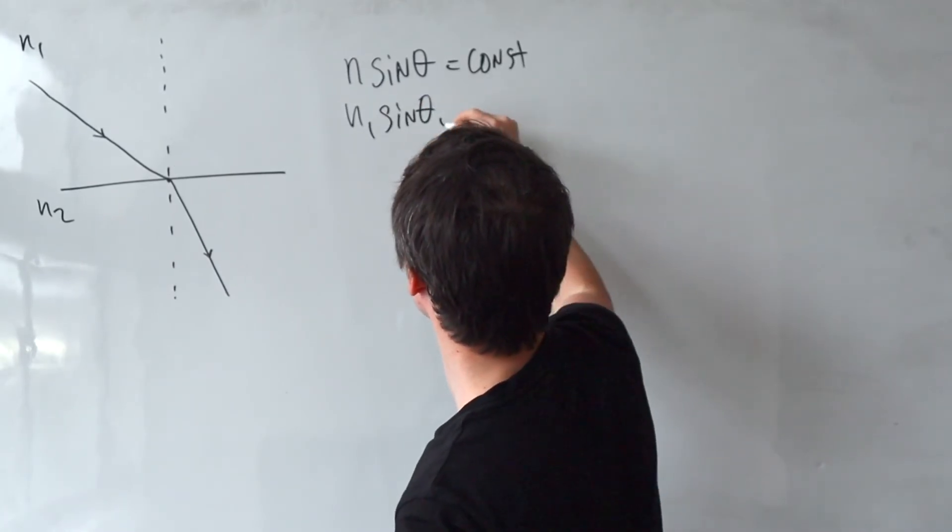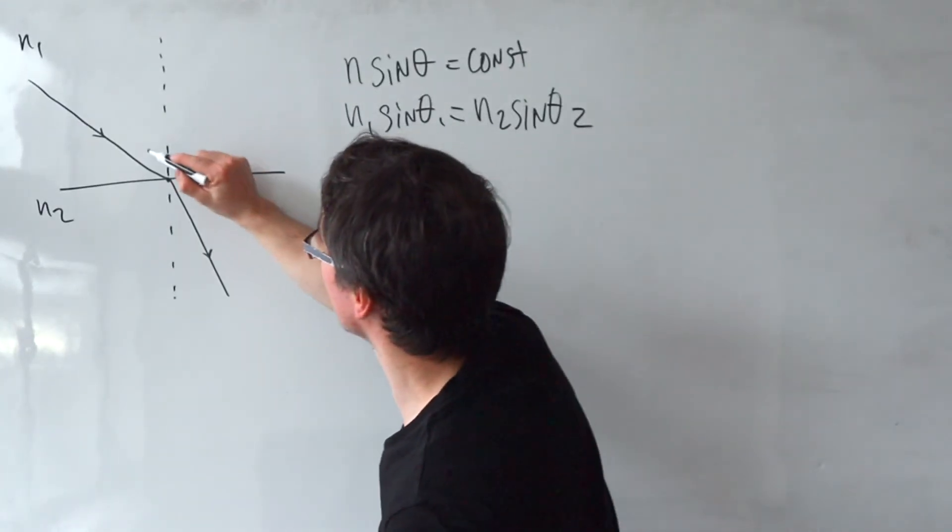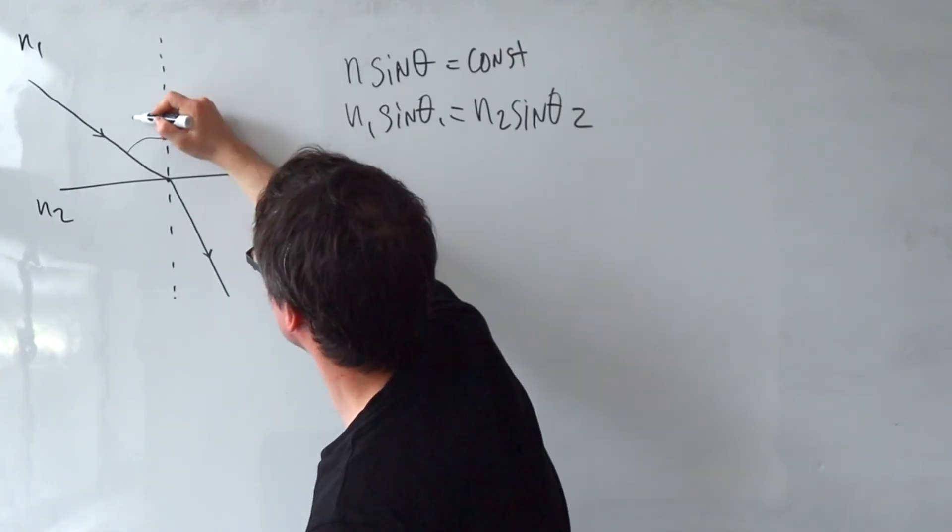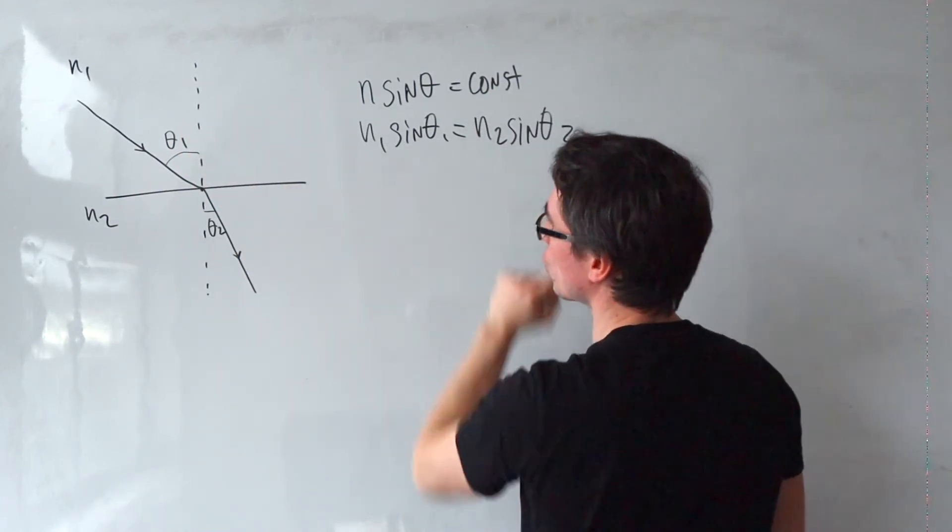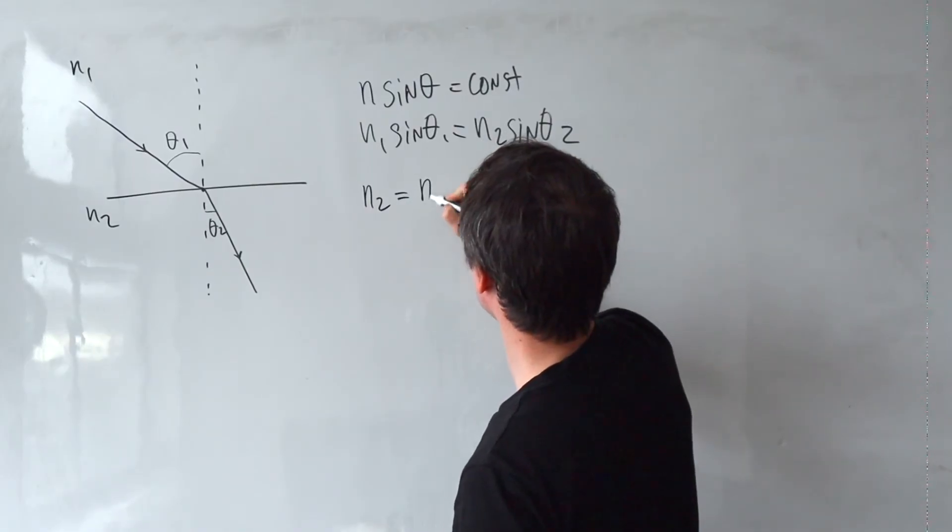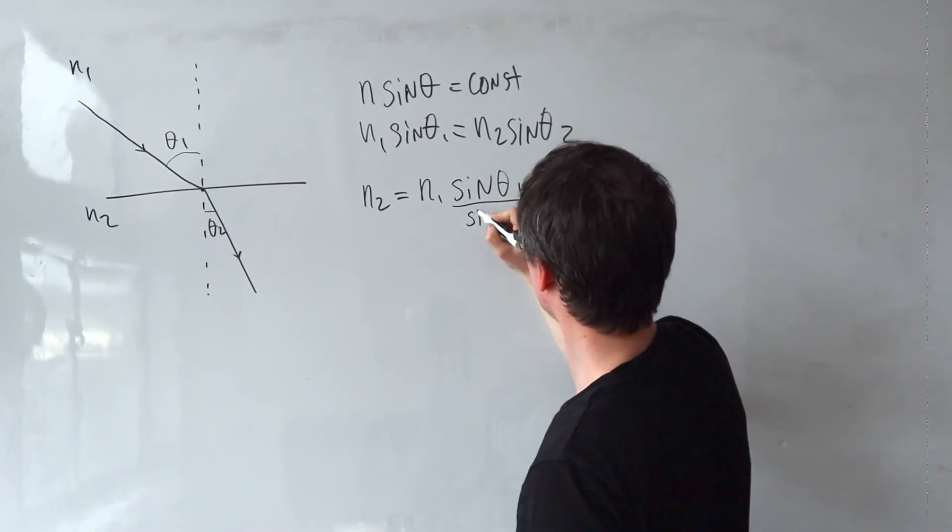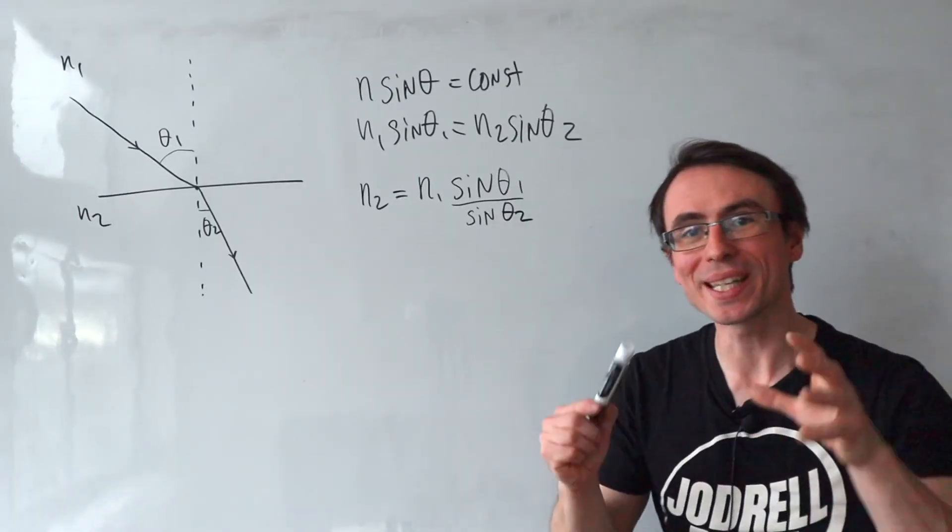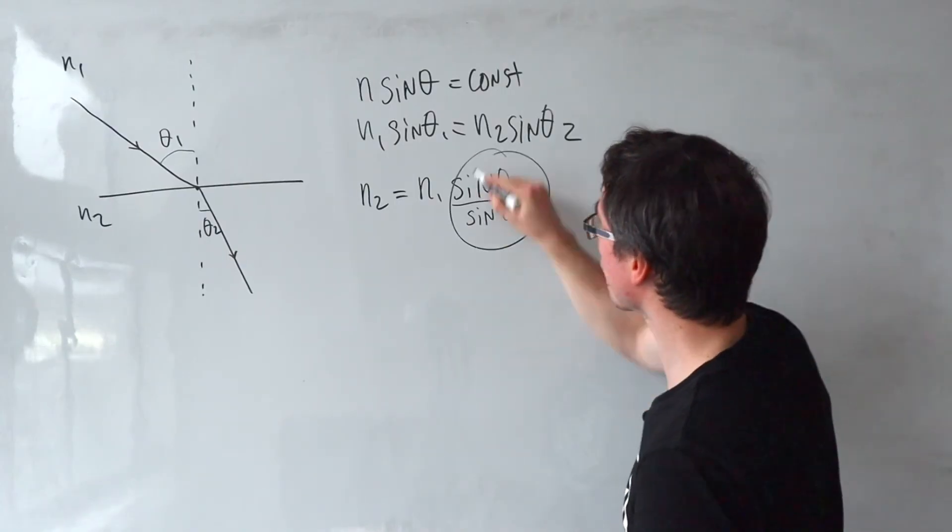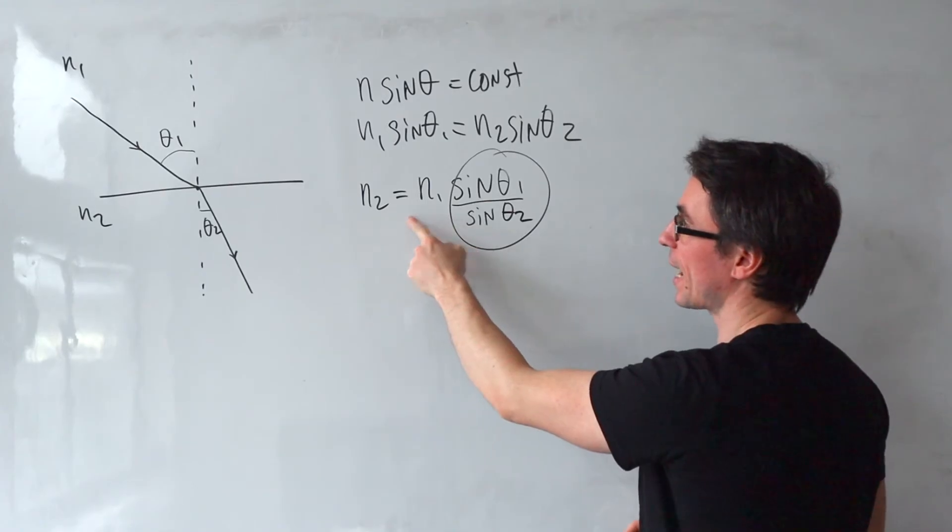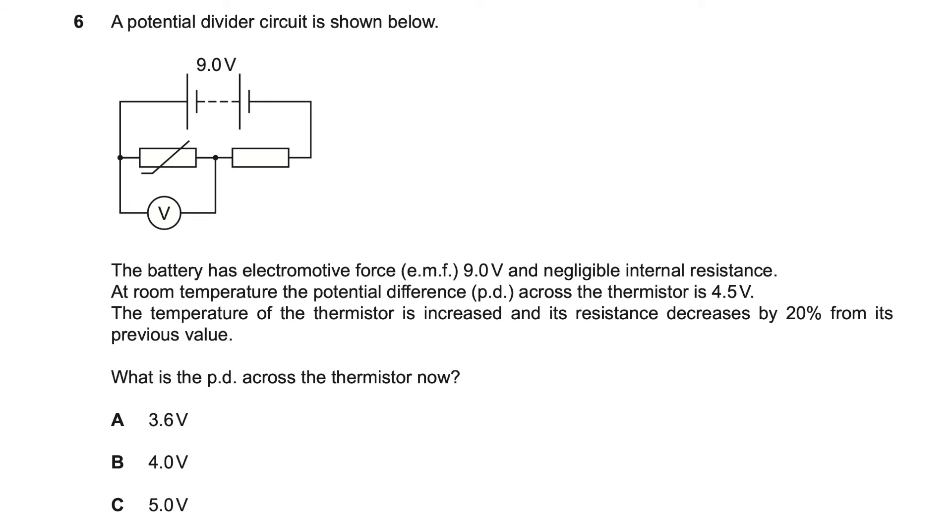In A-level, we have to explain things using physical laws, and the law which governs this is Snell's law, which says that N sine theta is equal to a constant. In other words, N1 sine theta 1 is equal to N2 sine theta 2. The angle theta is the angle with respect to the normal here. Because we're trying to prove that N2 is bigger than N1, let's just rearrange for N2, which will be N1 sine of theta 1, divide that by sine of theta 2. We can see from the diagram that theta 1 is larger than theta 2, which means that this whole thing will be larger than 1, meaning that N2 has to be bigger than N1.